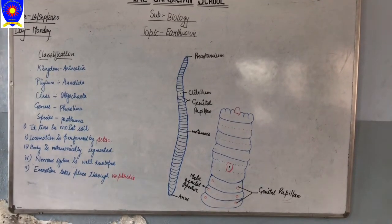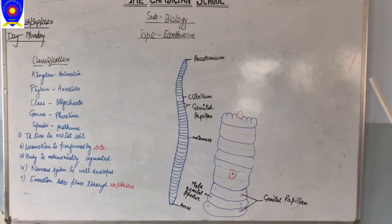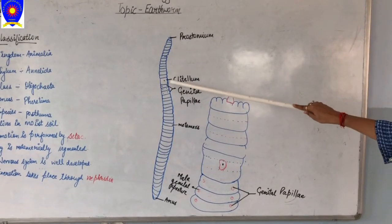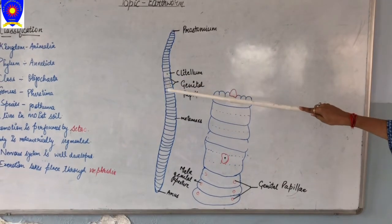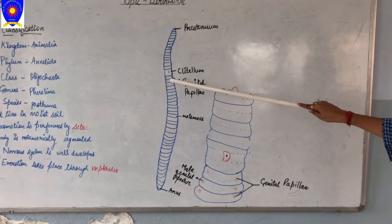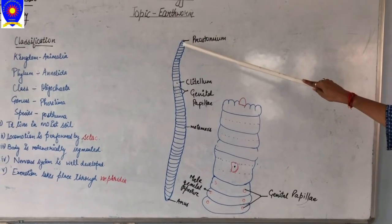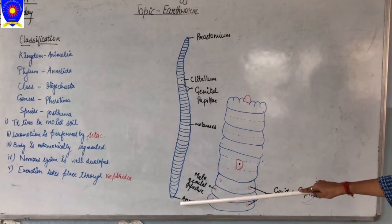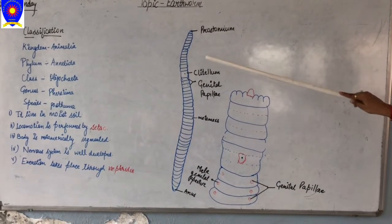I will show you the picture of this earthworm. As you can see, the body is segmented and these segments are known as metamers. This particular part is known as the clitellum, which also stores the cocoons. This is the genital papilla, which I have elaborated here. This one is the prostomium — that is the mouth — which elongates to the peristomium. And this one is the anus.